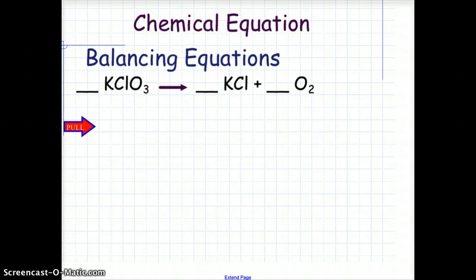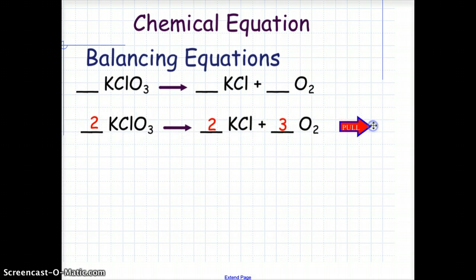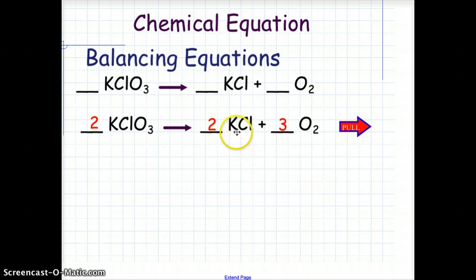Let's try one more sample. Here we have potassium chlorate breaking down in decomposition to create potassium chloride plus oxygen gas. Try this one on your own — turn off the video, and when you are finished, turn the video back on. The potassium chlorate yielding potassium chloride and oxygen gas is balanced by placing a 2 in front of the KClO₃, giving us 2 potassium and 2 chlorine along with 6 oxygen. We then add a 2 in front of the KCl, giving us 2 potassium and 2 chloride, and a 3 in front of the O₂ to give us the 6 oxygen necessary to balance this chemical equation.